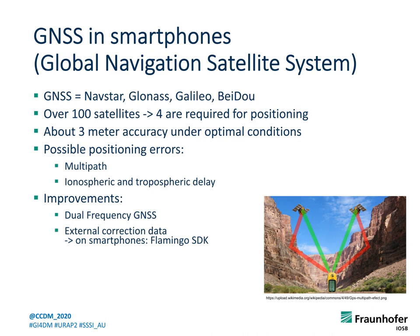The next technology we use is the Global Navigation Satellite System, short GNSS. GNSS consists of the systems GPS from the US, GLONASS the Russian system, Galileo the European system, and Baidu the Chinese system. In Germany no one uses the term GNSS — we all just say GPS. With all systems combined, there are over 100 satellites in orbit and you need to receive signals from 4 to calculate your position on Earth. Based on the used frequency, we can expect accuracy of about 3 meters under optimal conditions.